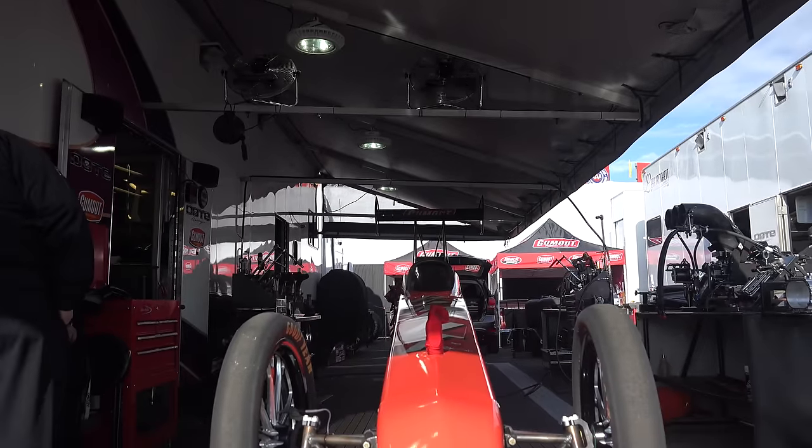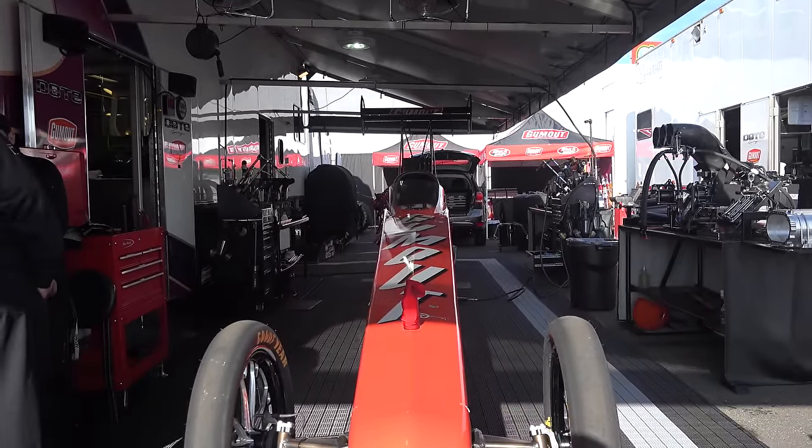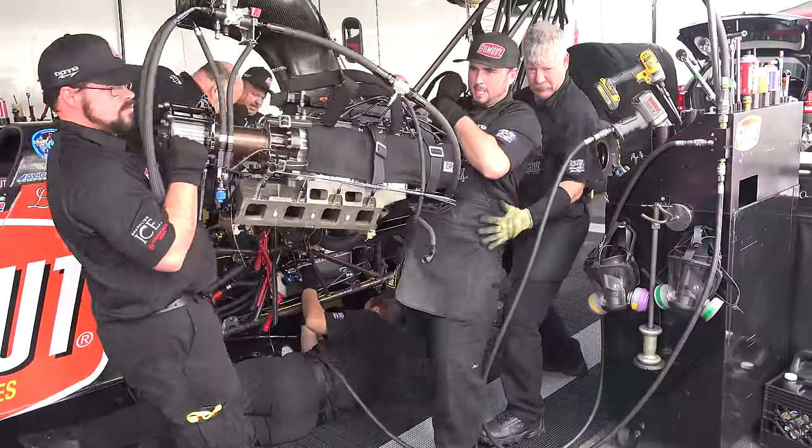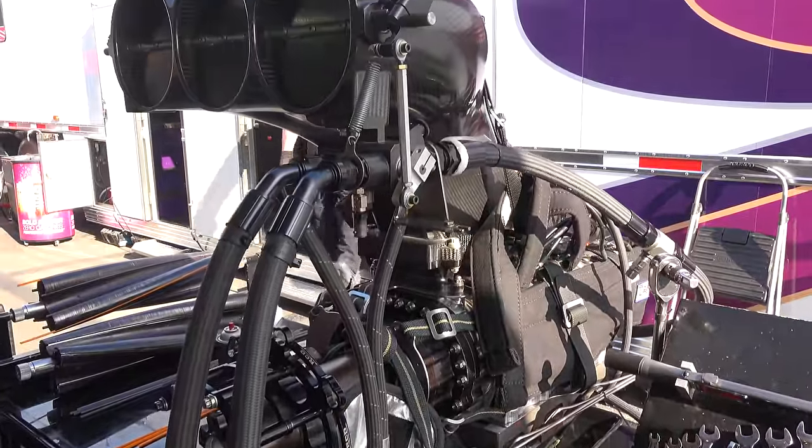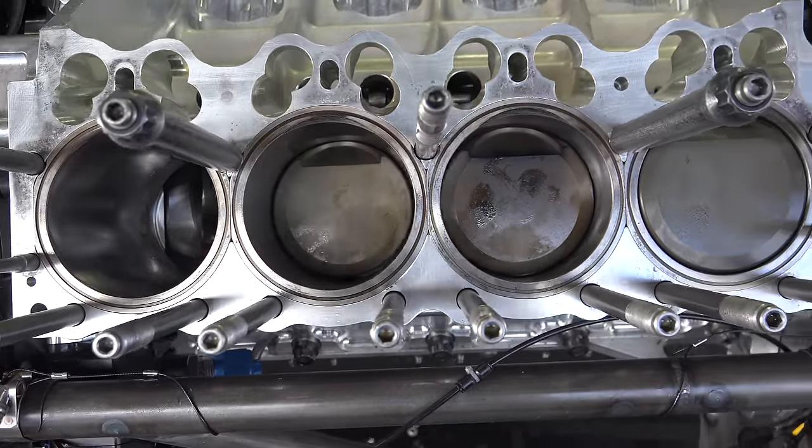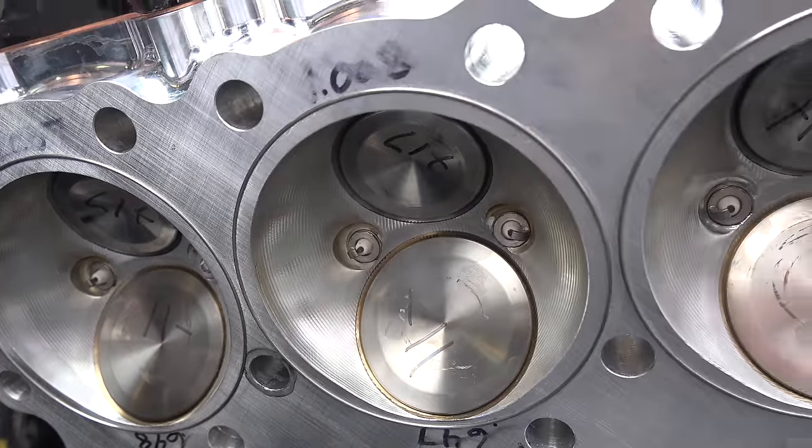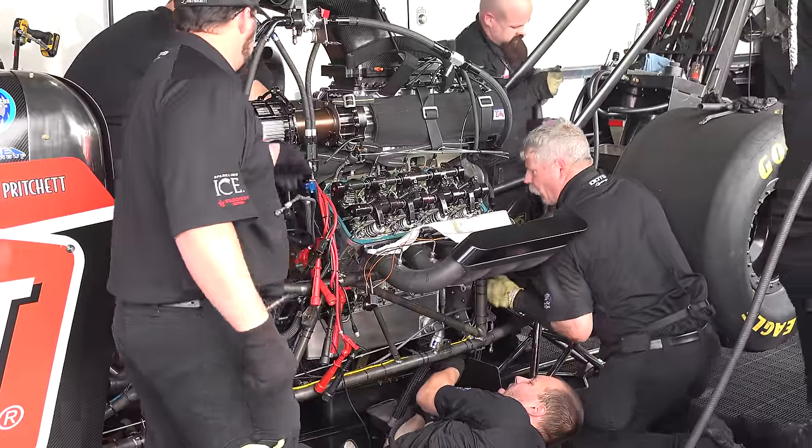These cars easily exceed 300 miles per hour and reach a hundred miles per hour in under nine tenths of a second. The engine is supercharged, reaching an absolute manifold pressure of about 60 psi by the end of the run. The engines rev to approximately 8,600 rpm and have a compression ratio of about 6.7 to 1. It also has no dedicated cooling system.